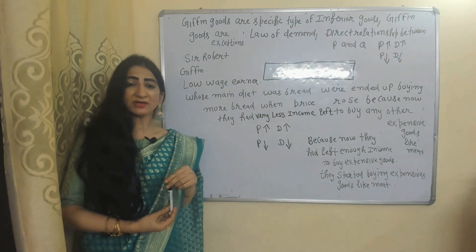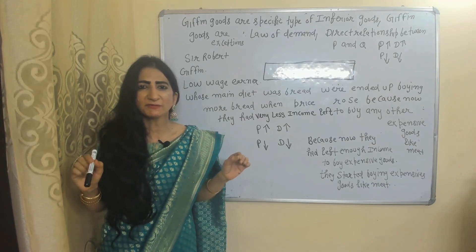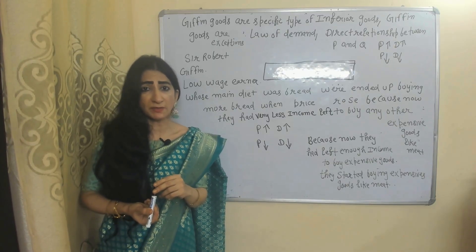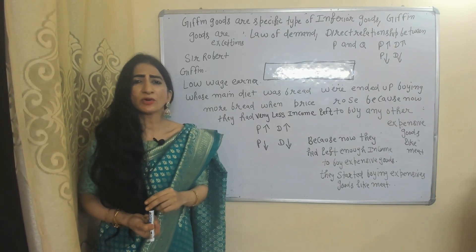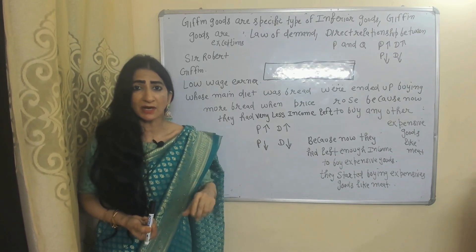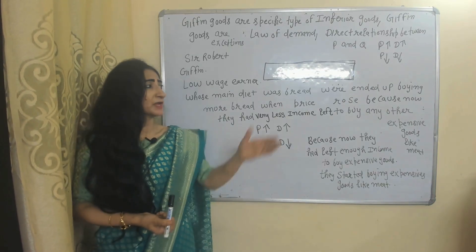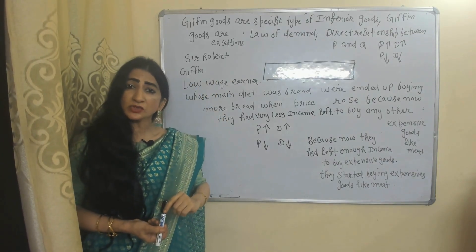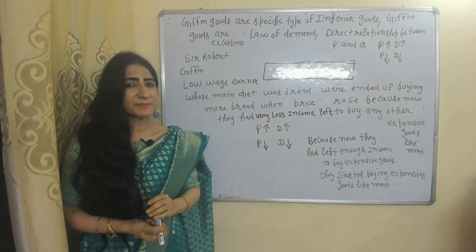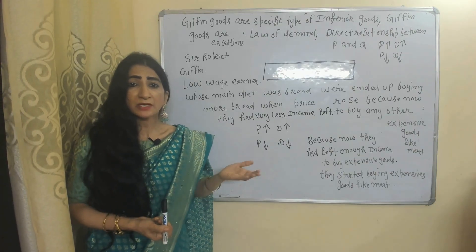Now we are going to talk about Giffen goods. Giffen goods are a specific type of inferior goods and are an exception to the law of demand. According to the law of demand, there is an inverse relationship between price and demand, but in case of Giffen goods there is a direct relationship — when price increases, demand also increases; when price falls, demand also falls.